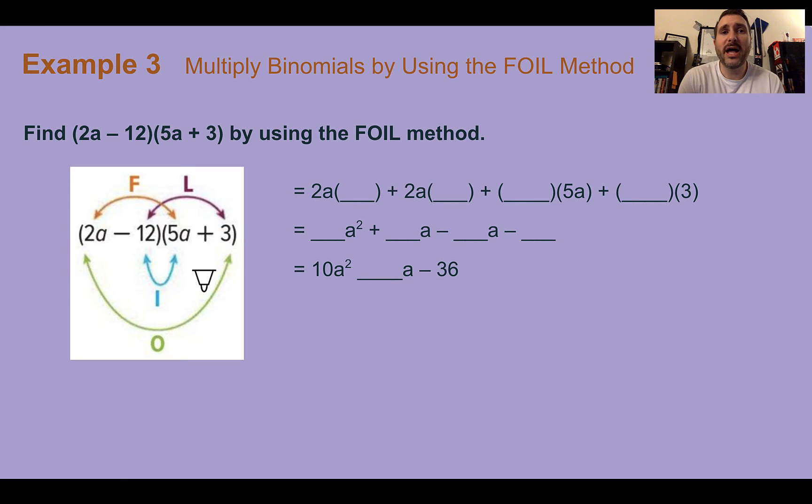Example three, multiply binomials by using the FOIL method. So find the product of 2a minus 12 and 5a plus 3 by using the FOIL method. So here we have our picture to help us show where each thing is. For our f, we have 2a times 5a, our first terms. Then our outer terms, 2a and 3. Our inner terms are negative 12 and 5a. And our last terms are negative 12 and 3.